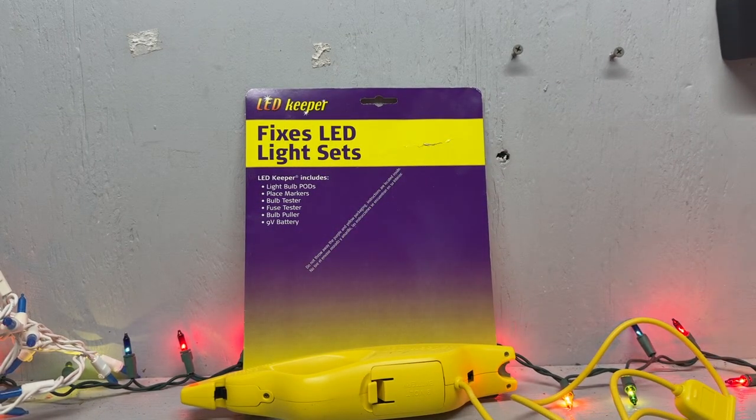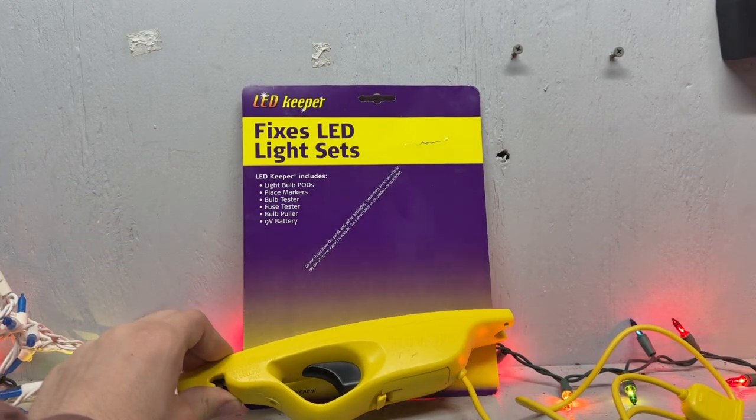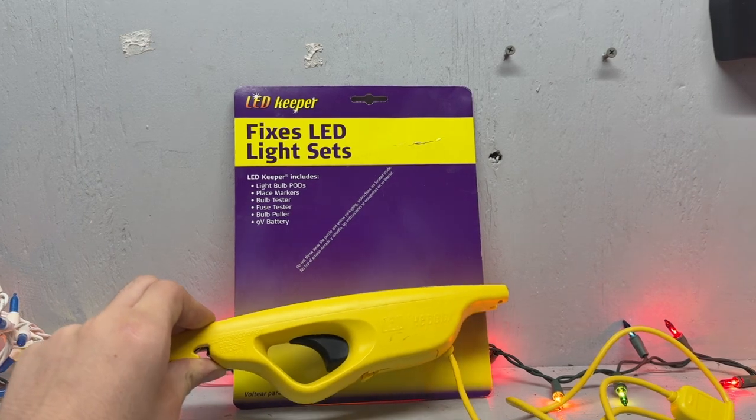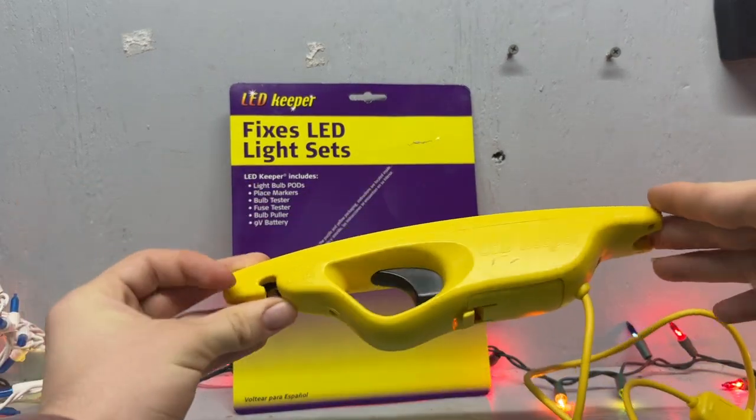That's the red one, and this one, the yellow one, is meant for fixing LED lights. I believe they did make an LED Keeper Pro, but as far as I know, it's pretty much the same thing. It just looks like the Light Keeper Pro, but in yellow.